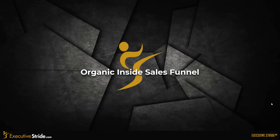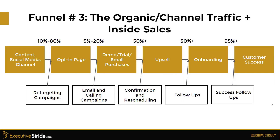The third funnel is the organic inside sales funnel. On the left side we have our content social media channel — whether it's YouTube, Facebook, Instagram, Twitter, or whatever — we're going to get about a 10 to 80 percent conversion to the opt-in page. From the opt-in page we're going to get a 5 to 20 percent conversion to the demo, trial, or small purchase — so they'll either book a demo, get a trial, or purchase something small like an ebook.